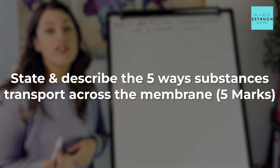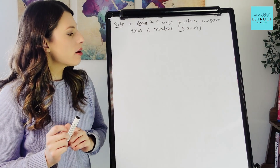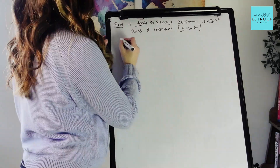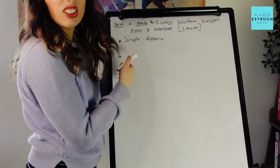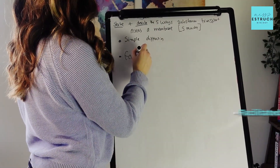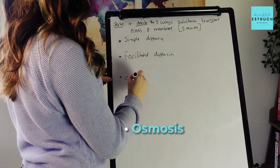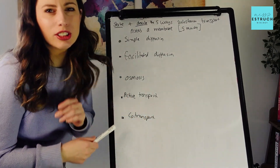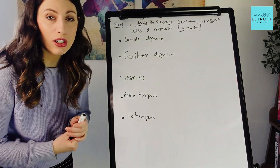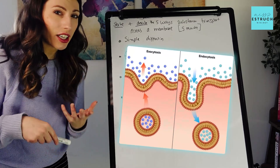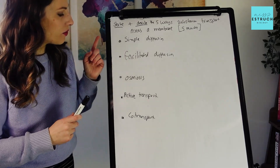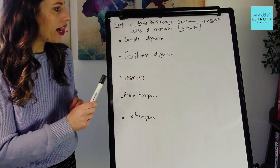Question number two: state and describe the five ways substances are transported across the membrane. I'm going to start by listing the five ways and then fill in the descriptions afterwards. We have simple diffusion, facilitated diffusion, osmosis, active transport, and co-transport. For AQA those are the five types. Other exam boards — Excel or OCR — also have exocytosis and endocytosis, so that could be an extra one if you're doing those.